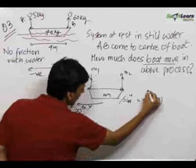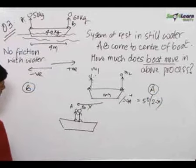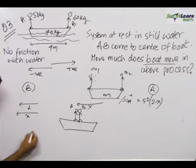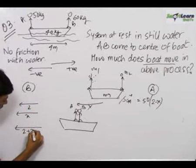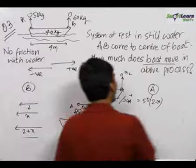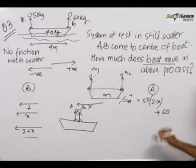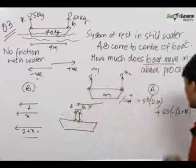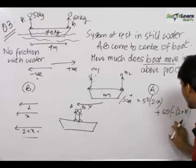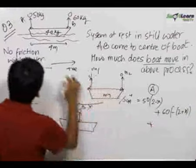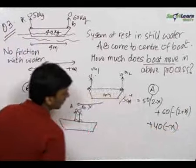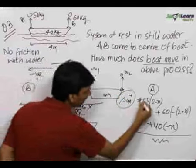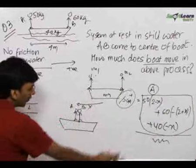For man B (60 kg), the displacement relative to the boat is 2 meters to the left, and the boat moves x to the left relative to ground, so the total displacement of B relative to ground is (2 + x) to the left, which is negative. This gives the term 60 × (−(2 + x)). The boat itself (40 kg) moves x to the left, giving the term 40 × (−x). Since we need the numerator equal to 0, the denominator need not be computed.